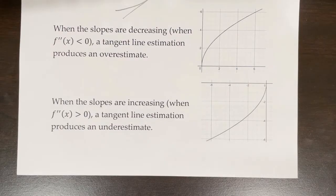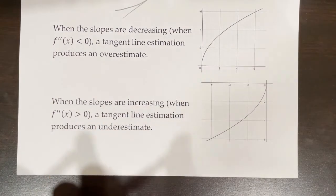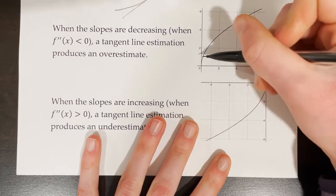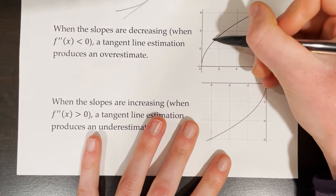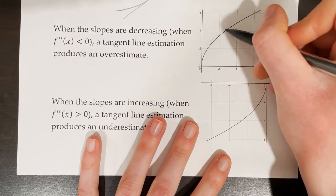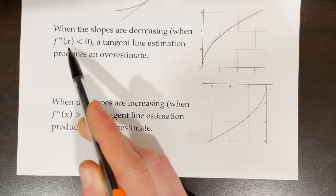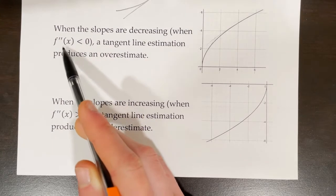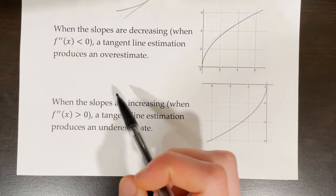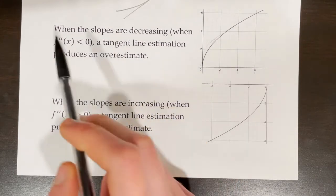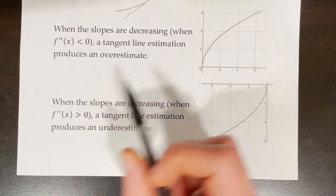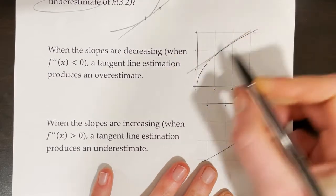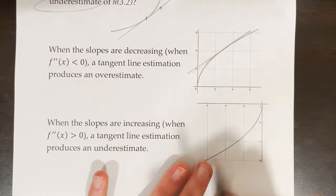Now let's connect what we've learned to second derivatives. Second derivatives are just the derivative of the derivative. When the slopes are decreasing — when f double prime of x is less than 0 — the slope of the slopes is negative, and a tangent line estimation produces an overestimate. This makes sense because if f double prime of x is less than 0, the graph is concave down, and the tangent line produces an overestimate — something higher than the actual value of the function.